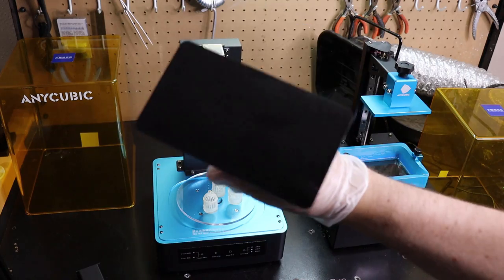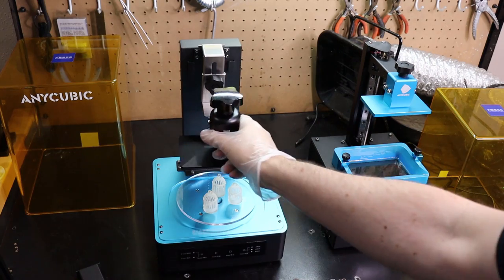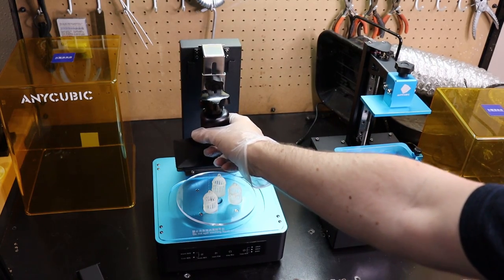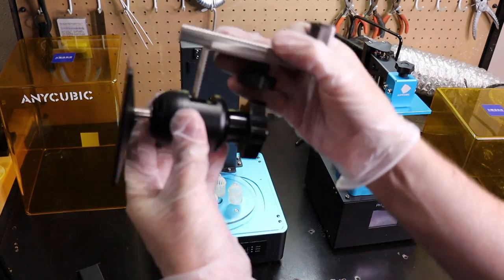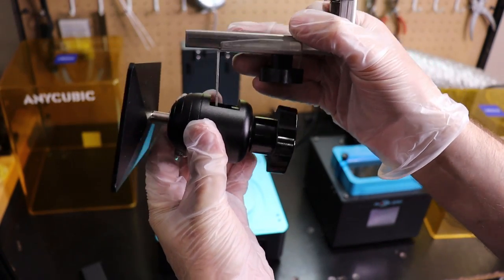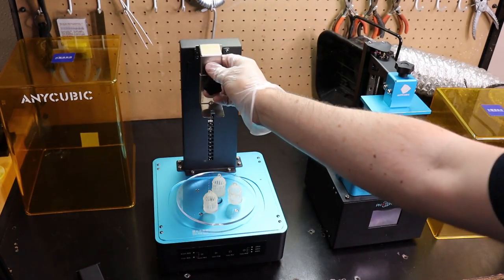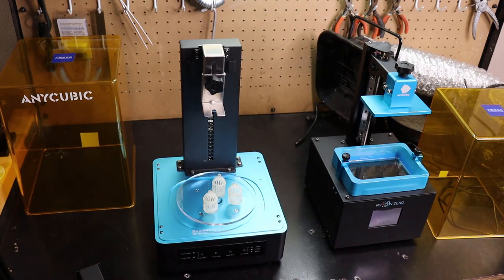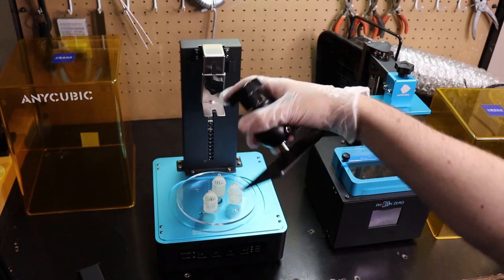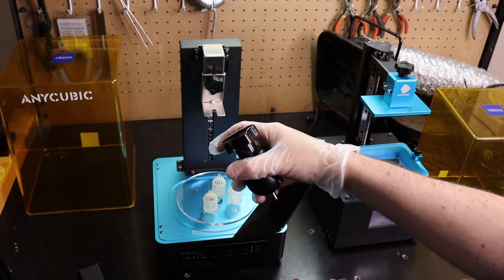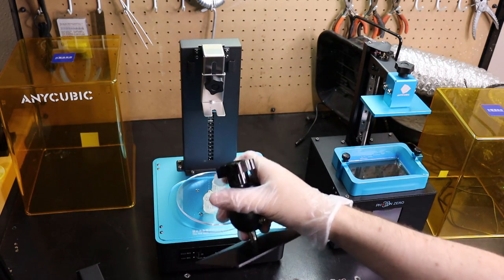Also, if you have other 3D printers with different build plates, they might not fit into this. So if you look here, it won't fit. It's just too big. You could probably shave this down and make it work if you really wanted to. But out of the box, this won't work. And this is from the Elegoo Mars. So if you get one of these and have a Mars or vice versa, you want to get a Mars and this, it won't work with this out of the box.